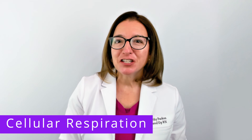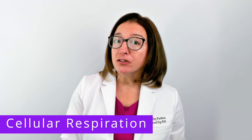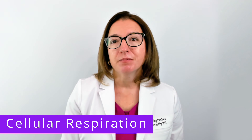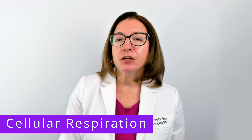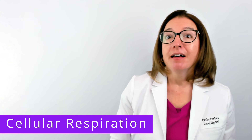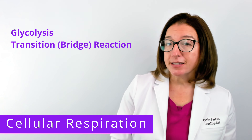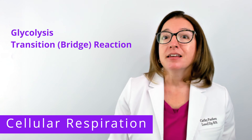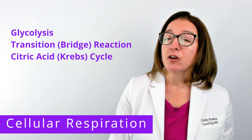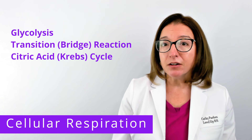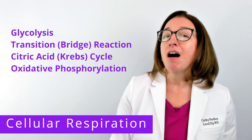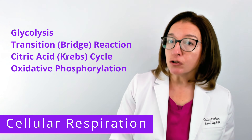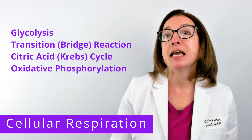Cellular respiration is the process that cells use to break down glucose to produce ATP. Cellular respiration includes the following steps: glycolysis, the transition reaction, which is also called the bridge reaction, the citric acid cycle, which is also referred to as the Krebs cycle, and oxidative phosphorylation, which includes the electron transport chain as well as chemiosmosis.